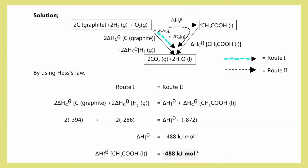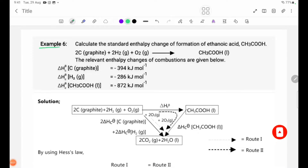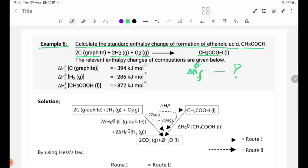As you can see, this lesson has a lot of calculations. We need to calculate the standard enthalpy change of formation — delta H°f — of ethanoic acid, CH₃COOH. The equation is: 2C (graphite) + 2H₂ (gas) + O₂ (gas) → CH₃COOH (liquid).